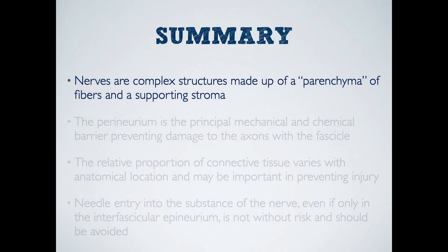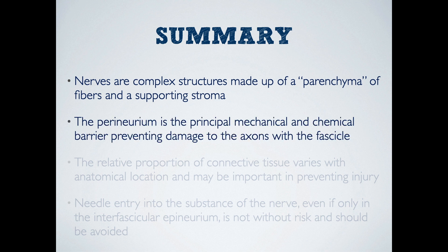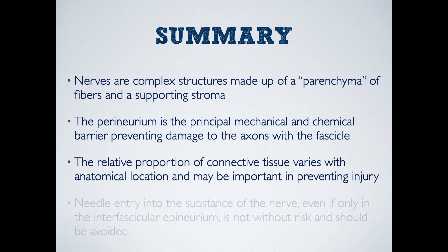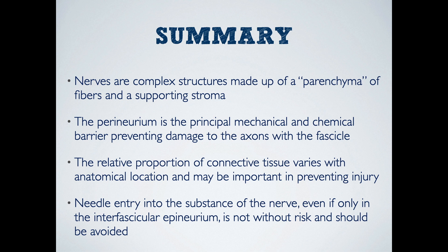In summary: nerves are complex structures comprising a parenchyma of fibers and an elaborate stroma of connective tissue. The tough, dense perineurium is the last line of defense against mechanical and chemical injury to the nerve fibers and should be respected. The proportion of connective to neural tissue seems to matter with respect to risk for nerve injury. And finally, all the evidence to date suggests that we shouldn't enter the nerve with our needle. We are built fairly tough as human beings, and there have been those who argue that intraneural or interfascicular injections are safe — but the anatomy and histology do not support that viewpoint, and I do question whether the purported advantage of some minutes saved is worth the potential risk. Thanks for your time, and I hope you'll tune in to more from this lecture series.